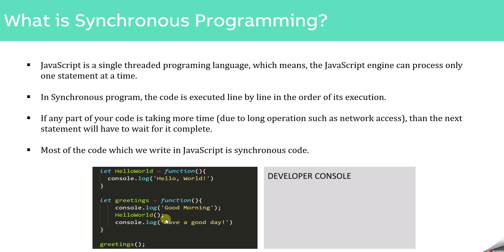Consider this box as the browser's developer console. So when we run this program, first of all we are creating two functions, Hello World and Greetings. And then we are calling the Greetings function. So when this function is called, the execution control will move to the definition of this function. And inside this function, the first line is a console.log statement. So once it is executed, it will log the 'Good Morning' message in the developer console.